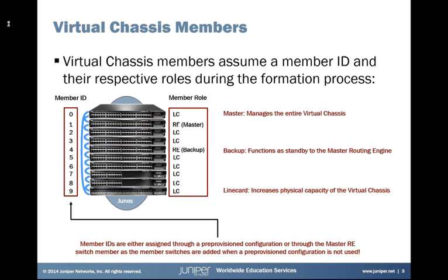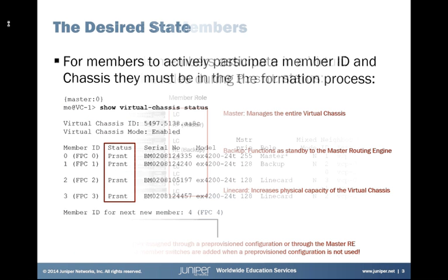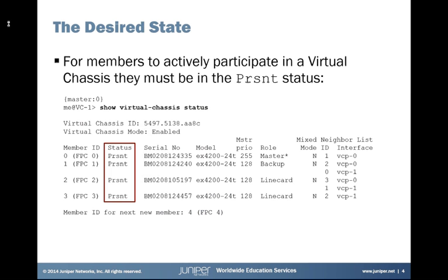During the formation process of a virtual chassis, each member will be assigned or will assume a member ID and a respective role, whether that role be a routing engine in the master or backup role, or a line card. The member IDs can range between 0 and 9 depending on the deployment. The member ID and role can be assigned through a pre-provisioned or static configuration, or through a dynamic process performed by the master routing engine. The desired state is that each member would be listed in the output of the show virtual chassis status command with a member ID and a status of present.